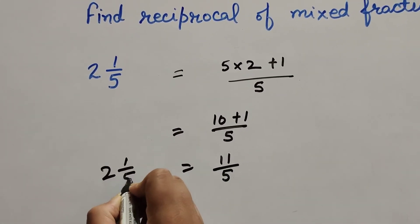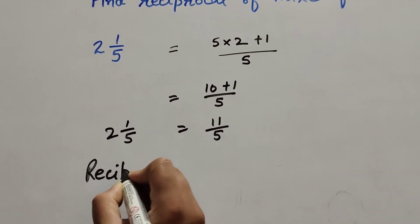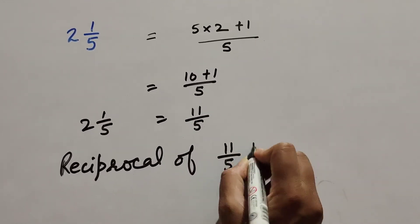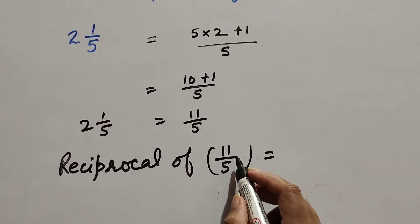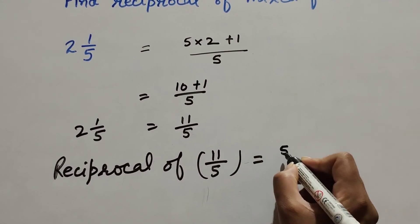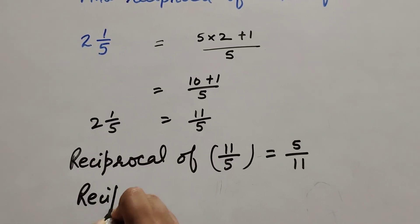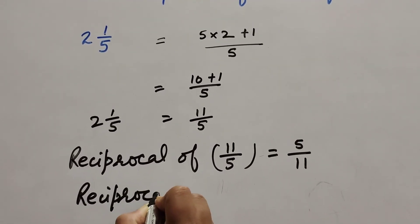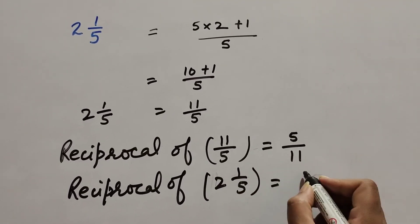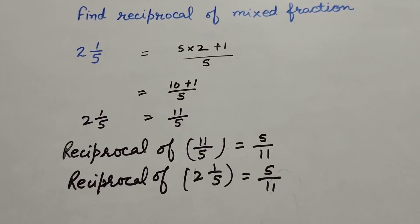The mixed fraction 2 and 1/5 is equal to 11/5. To find the reciprocal, we interchange the numerator and denominator, so the reciprocal of 11/5 is 5/11. Therefore, the reciprocal of the given mixed fraction 2 and 1/5 is equal to 5 upon 11.